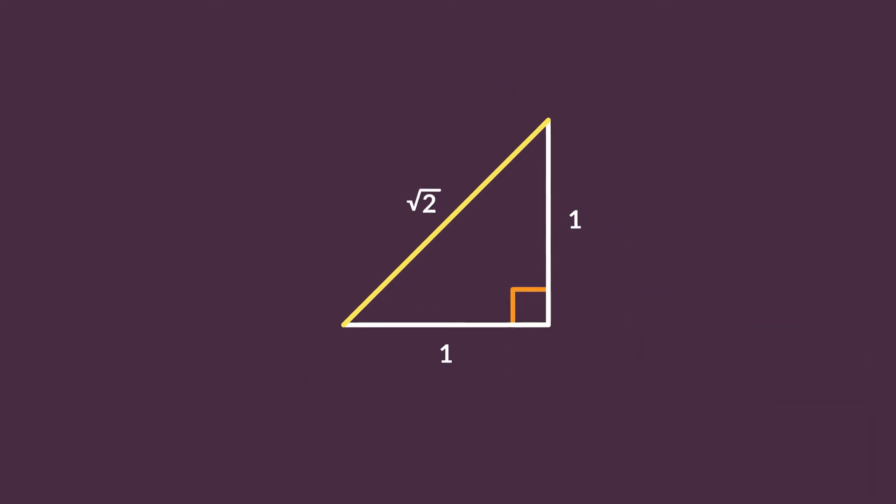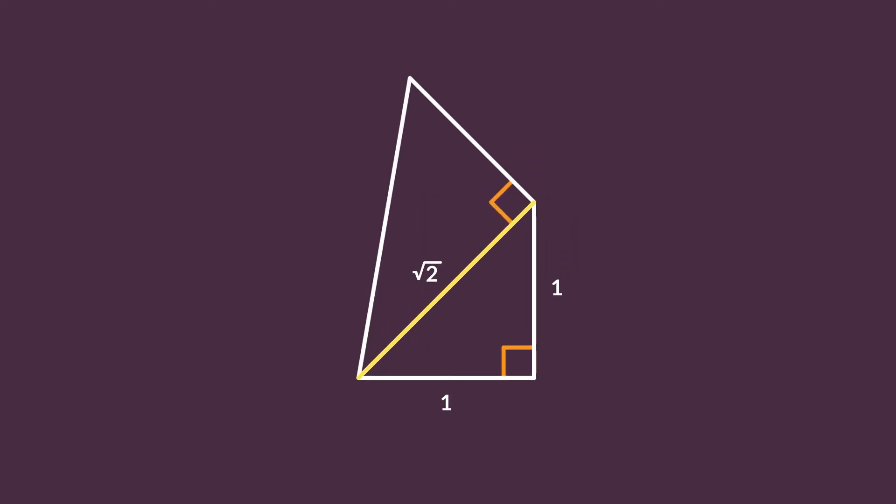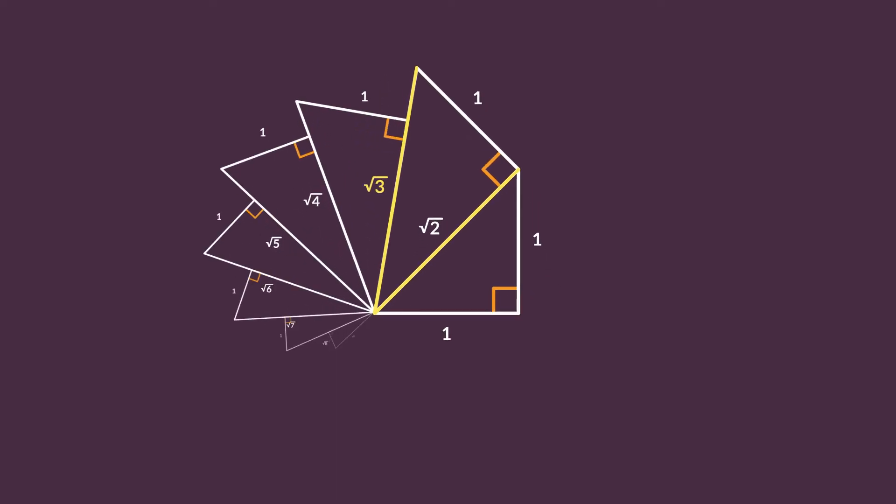The hypotenuse method can be used to show the roots of whole numbers from the square root of 2 and upwards. If we draw another right-angled triangle with a side of one unit on the hypotenuse of our constructed square root of 2, then the new hypotenuse would be equal to the square root of 3, and we can carry on in this way.